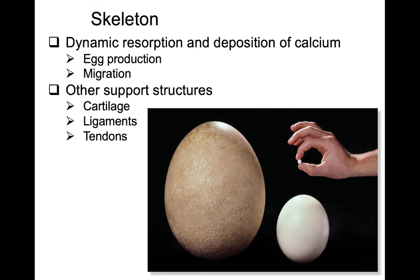There are other support structures associated with the skeleton in birds. Cartilage is an important series of tissues that provide some isolation between bones so that they don't rub against each other. Ligaments provide the ability of bones to be connected to each other. And tendons are the skeletal material that connects the bones to the muscles.